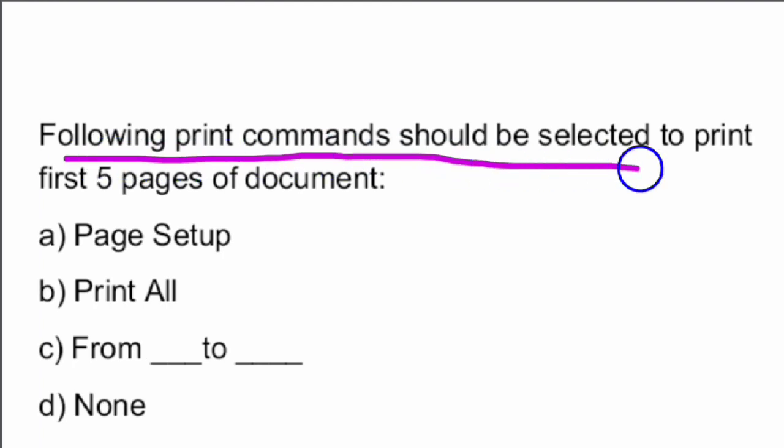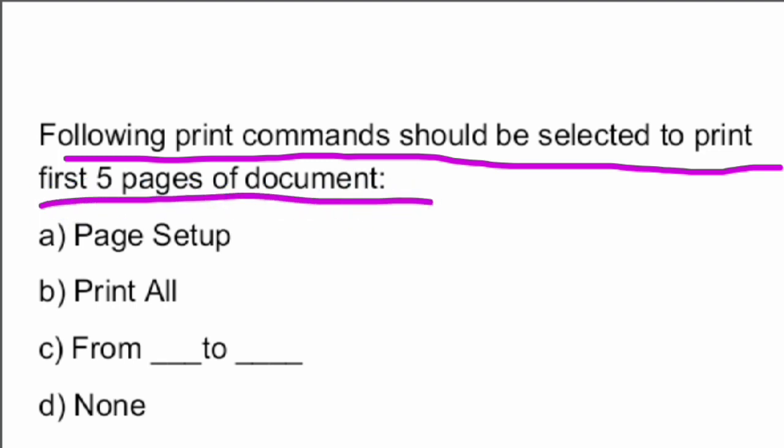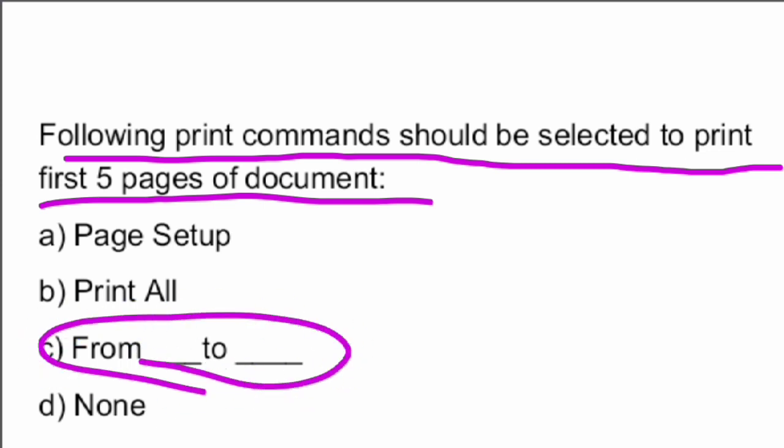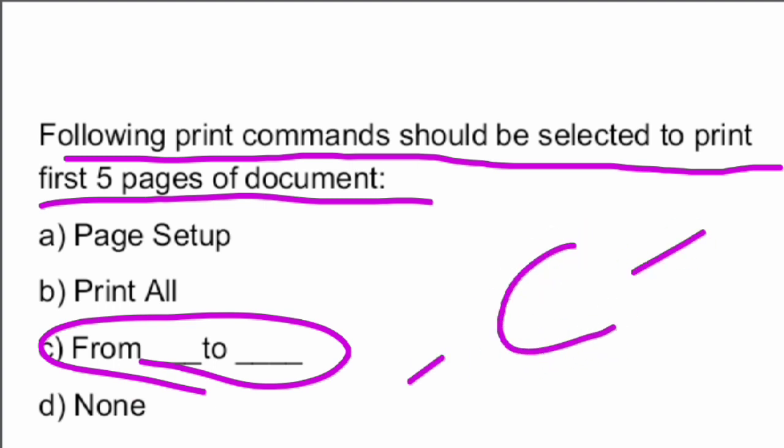Next question: Which print command should be selected to print only the first five pages of a document? In the print options, you can specify from which page to which page. Option C is the right answer — specifying the page range to print only those particular pages.